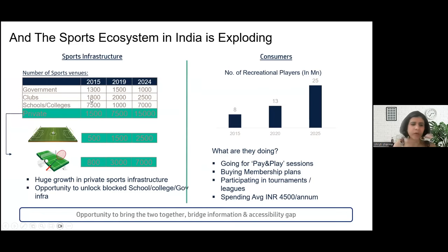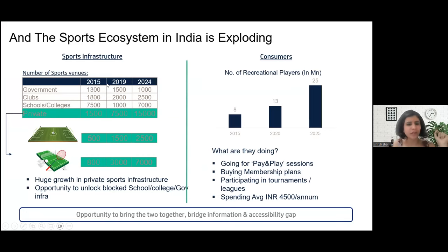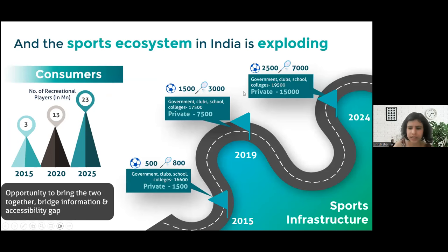If you look at this table showing the number of sports venues in government clubs, schools, colleges, and private institutions from 2015 to 2024 — it's like a roadmap of sports venues. Can we show this differently? Absolutely. You still have the same data, but you're showing it in a much more interesting manner. You don't need to stick to the same old boring format.